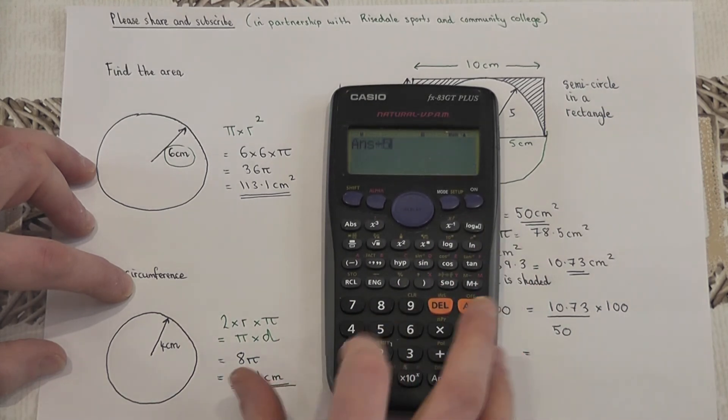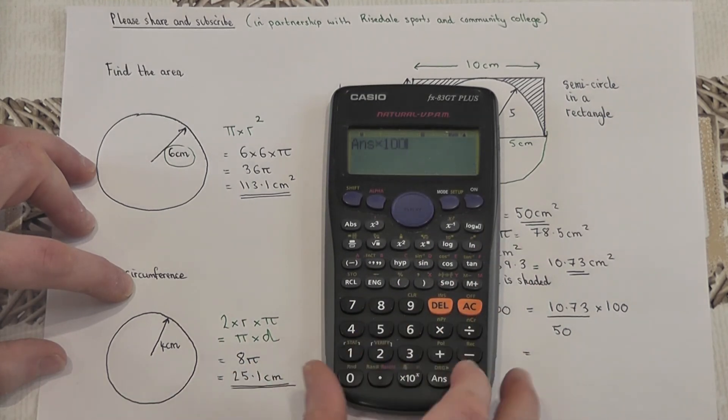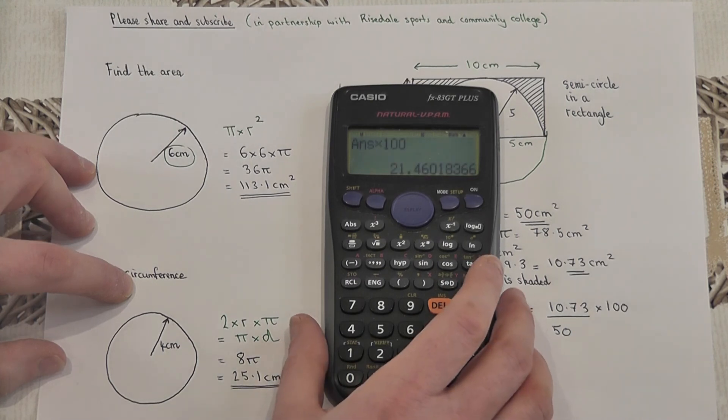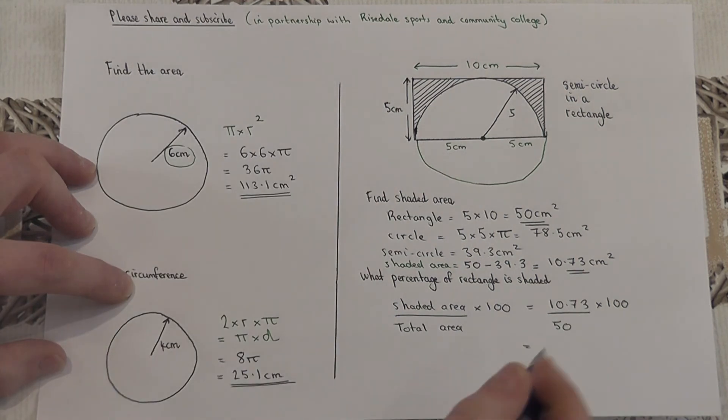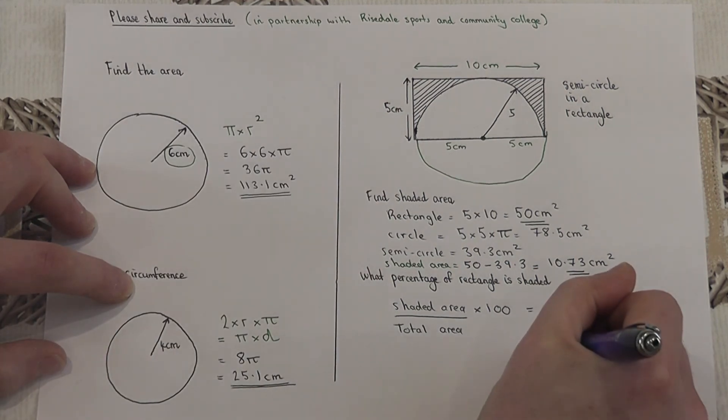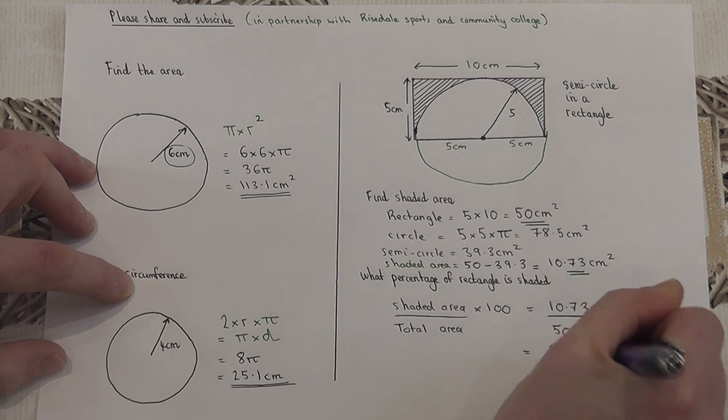So on here, I've got the 10.73, I'll divide by 50, times by 100, and we get 21.5%. So the shaded percentage is 21.5%.